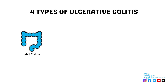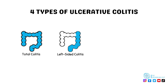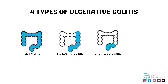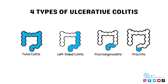The first type is total colitis, when the entire large intestine is affected with inflammation, also known as pancolitis. Left-sided colitis is where structures on the left-hand side of the large intestine are inflamed, including the descending colon and rectum. Proctosigmoiditis is where the rectum and sigmoid colon have inflammation.